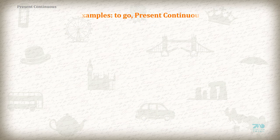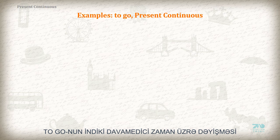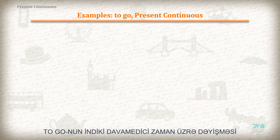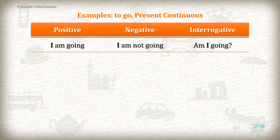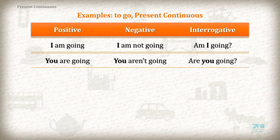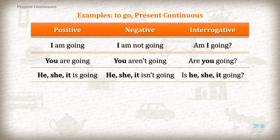Examples using 'to go' in the Present Continuous. Positive: I am going. Negative: I am not going. Interrogative: Am I going? You are going. You aren't going. Are you going? He, she, it is going.